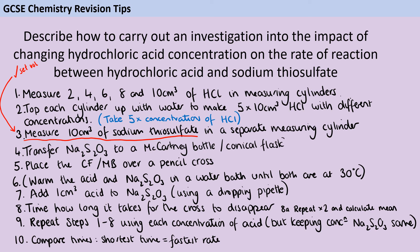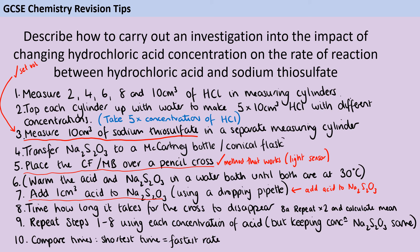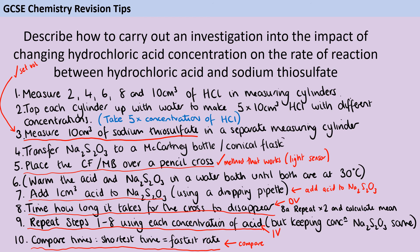The six essential things you must include are: set volumes, ensuring that aspect of the experiment is controlled; either a pencil cross that disappears or a light sensor indicating when a certain amount of light is blocked; adding the acid to the sodium thiosulfate; timing how long the reaction takes; repeating with different concentrations of acid to change the independent variable — you don't need five concentrations, just two different ones would give valid data; and finally, comparing your data. As long as you've got those six things, even with some additional detail missing, you can get six marks.